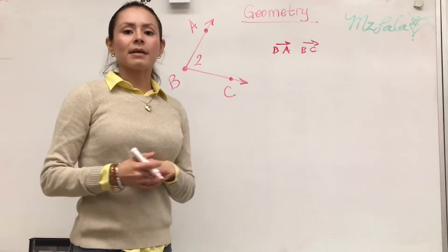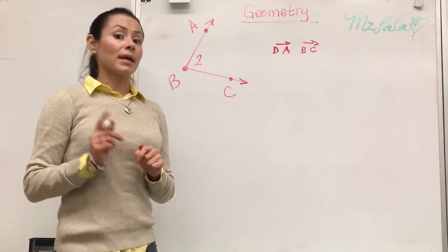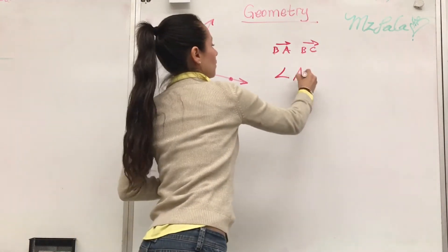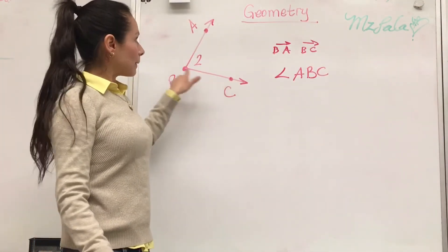So if we wanted to name this figure, there's four ways we can name this figure. We can call it angle ABC. We can call it angle CBA.